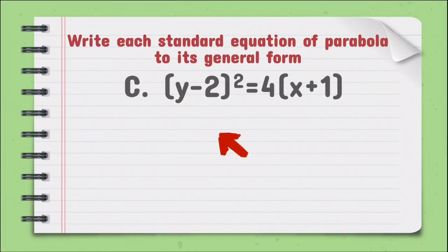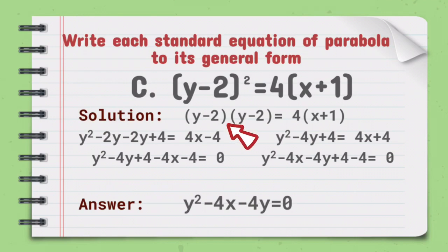For letter C, we have the quantity of y minus 2 squared is equal to 4 times the quantity x plus 1. As we can see, the quantity of y minus 2 squared is the square of a binomial. We have to expand it: it becomes the quantity y minus 2 times the quantity y minus 2. Using the FOIL method — the first term: y times y equals y squared; the outer term: y times negative 2 equals negative 2y; the inner term: negative 2 times y equals negative 2y; and the last term: negative 2 times negative 2 equals positive 4. Simplifying, negative 2y minus 2y equals negative 4y. So the perfect square trinomial is y squared minus 4y plus 4.